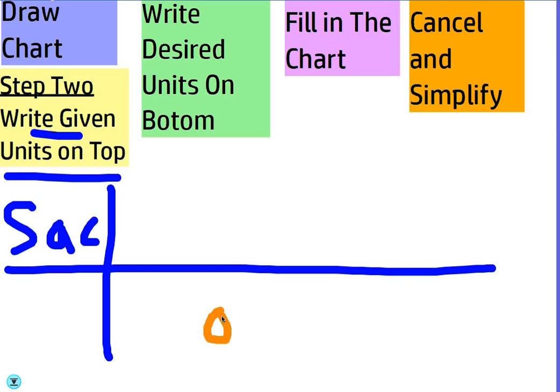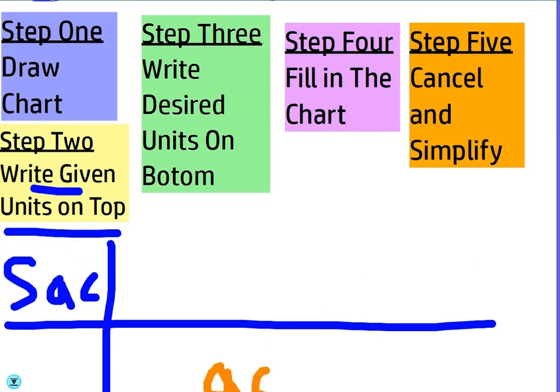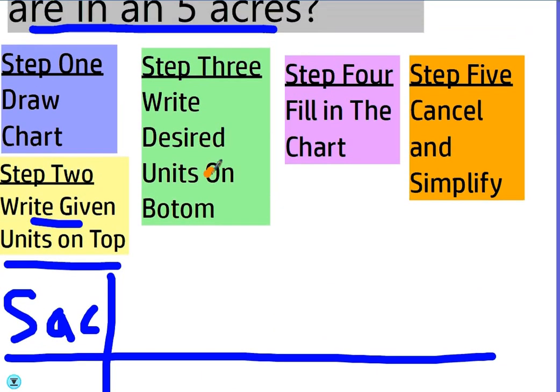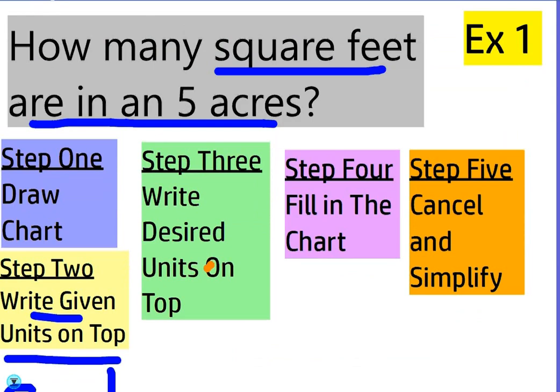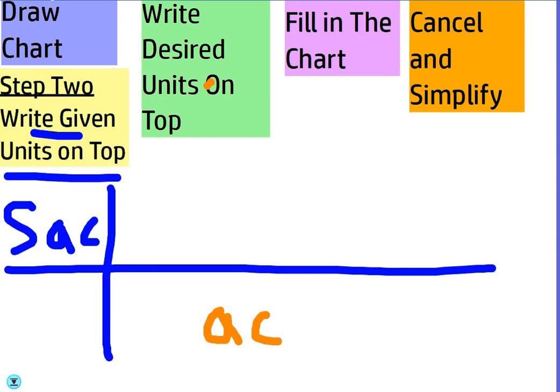We want to get rid of that unit, so we're going to put acres on the bottom. I should say write desired units on bottom. What units do we want on top? Square feet, right. When you put square feet on top.